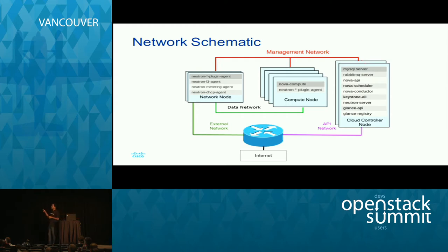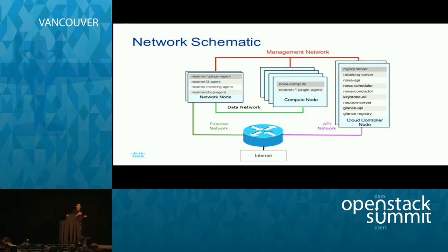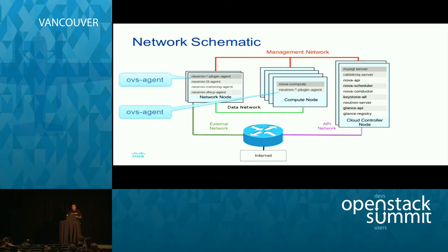Then there is the external network so that people from outside or from the internet can access this system. And then there is the API network, which allows tenants to actually use this service. This API network is also exposed to the outside world, and in many cases the external network and the API network might be the same. OVS runs wherever the Neutron plugin agent is — those are the places where the OVS agent works.